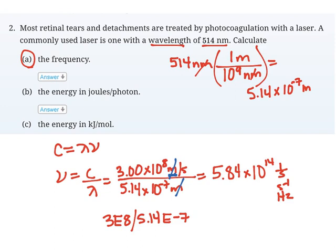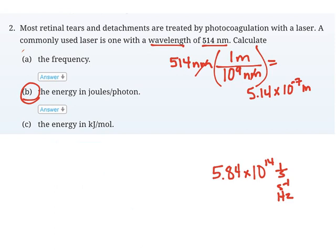Let's look at the second part of the problem. Part B wants us to find the energy in joules. I have another equation that relates frequency and energy: E equals H times the frequency, where E is energy, H is Planck's constant from your equation sheet, and nu is frequency.